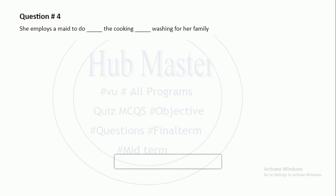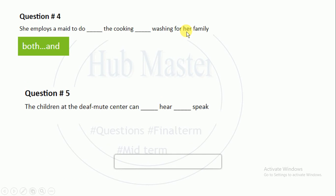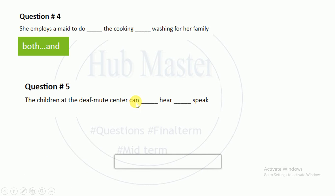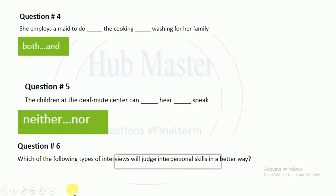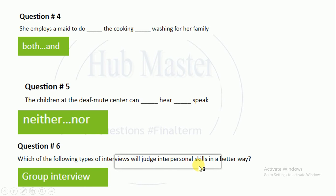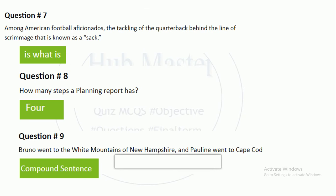'She employs a maid to do both the cooking and watching for her family.' 'The children at the deaf youth center can neither hear nor speak.' You need to know the use of 'neither...nor.' Which type of interview judges interpersonal skills better? Group interviews judge interpersonal skills in a better way.